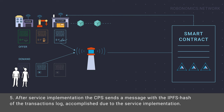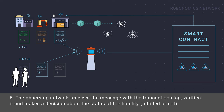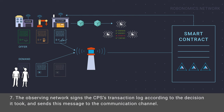The observing network receives the message with the transaction log, verifies it, and makes a decision about the status of the liability. The observing network then signs the cyber-physical system's transaction log according to the decision it took.